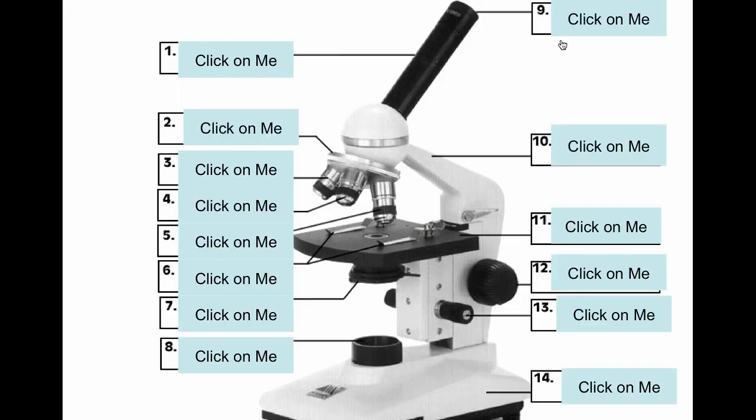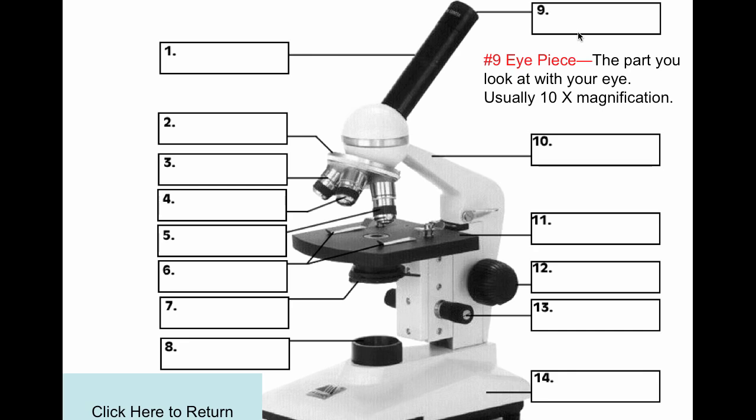We'll start at the top with number 9. This is called the eyepiece. It's the part which you look through. It has a magnification of 10x. It's also known as an ocular lens.